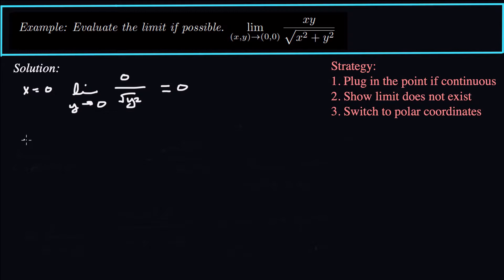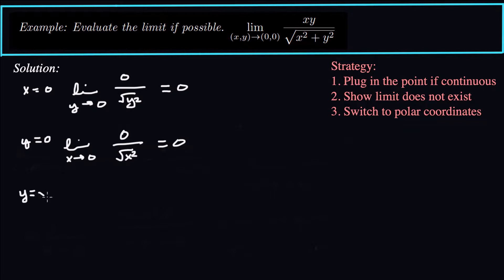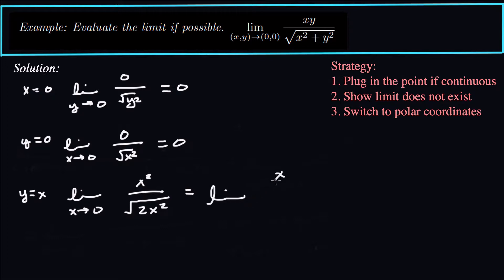Let's try the line y equals zero — that's another path to the origin. The limit as x goes to zero of zero over the square root of x squared is also zero. Both of these give us zero, which doesn't tell us anything necessarily. So let's try y equals x, another path through the origin. The limit as x goes to zero: if y equals x, we get x squared in the numerator and square root of 2x squared in the denominator. This equals the limit of x squared over the square root of 2 times the absolute value of x as x goes to zero — which is zero from both sides. So this limit is zero again.